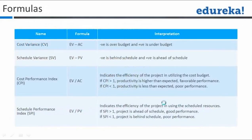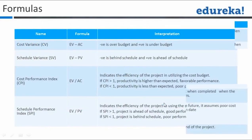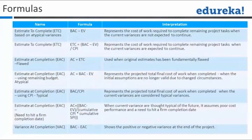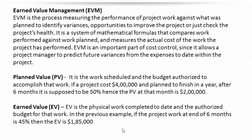These are the different formulas. We will not go through each in detail but will take an example to understand how this works. Earned value is the process of measuring the performance of the project against what was planned, to identify variance and opportunities to improve the project or check project health. It's a system of mathematical formulas that compares work performed against work planned and measures the actual cost of the work the project has performed.